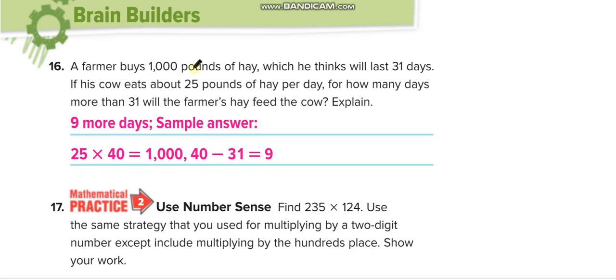A farmer buys 1,000 pounds of hay, which he thinks will last 31 days. If his cow eats about 25 pounds of hay per day, for how many days more than 31 will the farmer's hay feed the cow? So 25 times what will give you 1,000? You have to think that. 25 times 40 is equal to 1,000. So it means 1,000 pounds of hay can be consumed up to 40 days.